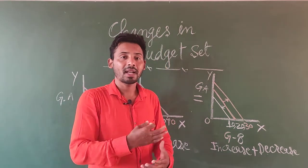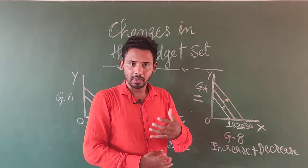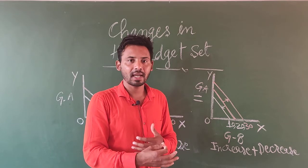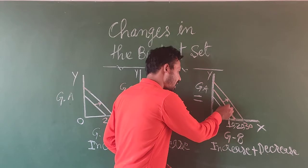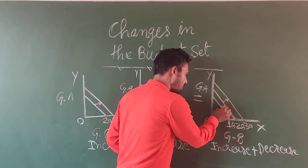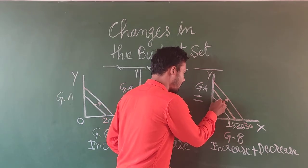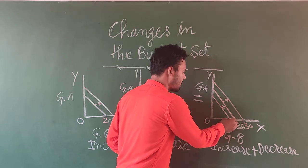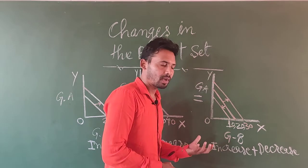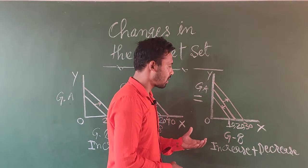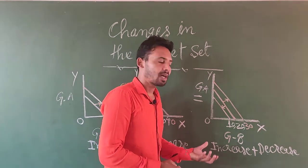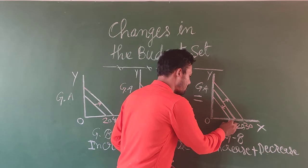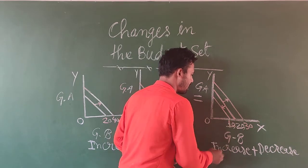Similarly, agar humara jo budget hai, humara jo income hai usko kum kar diya jayega, toh humara income kum ho jayega. Usko hum log graph mein dikhayenge inward budget line and this is our budget line moving inward just from the original amount or original budget line. And rupees 10 is given here.